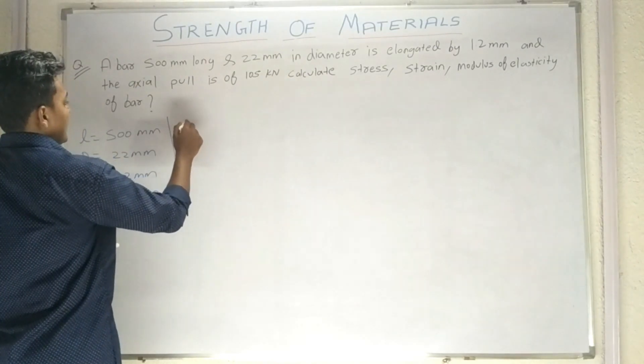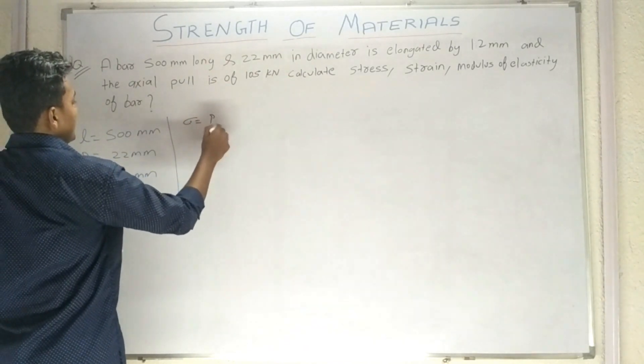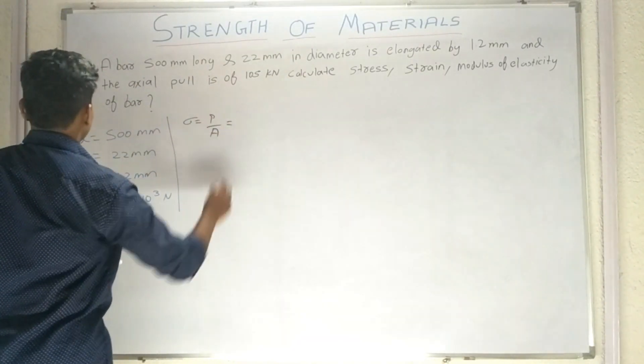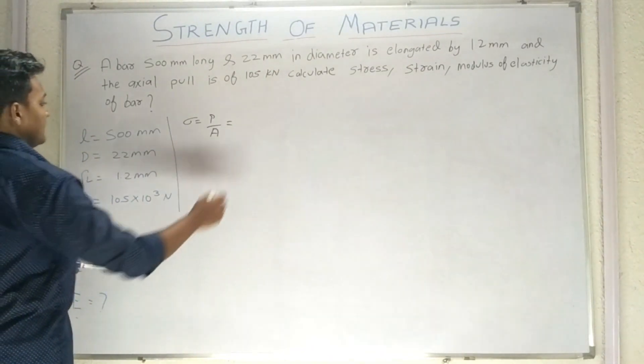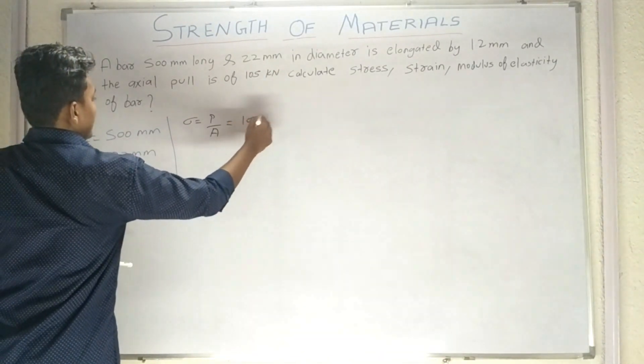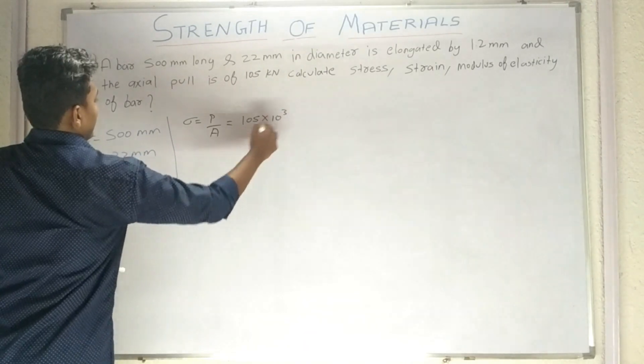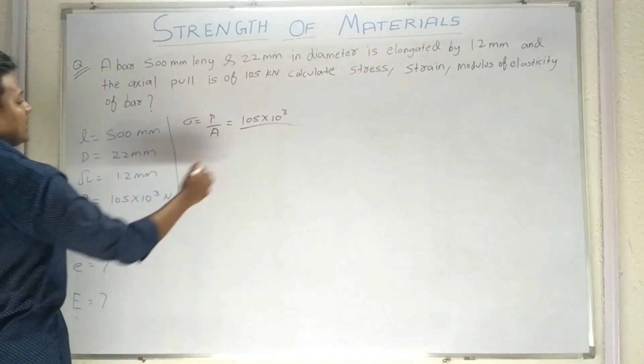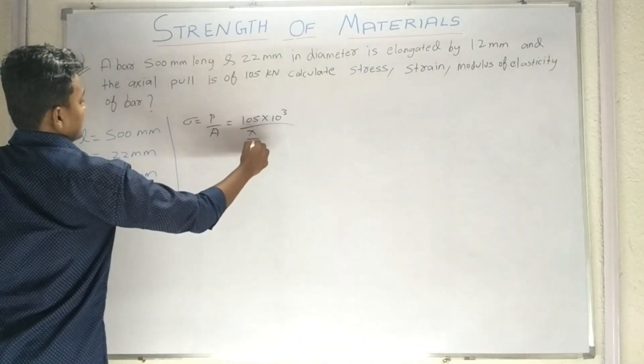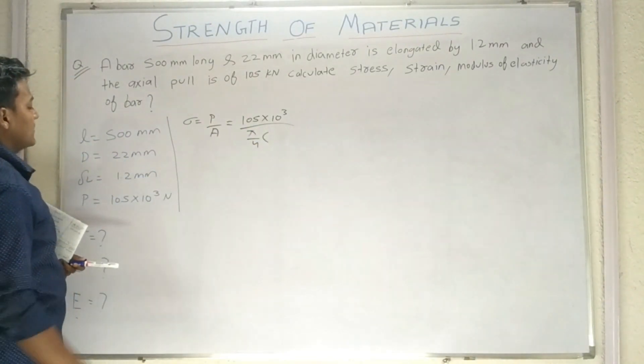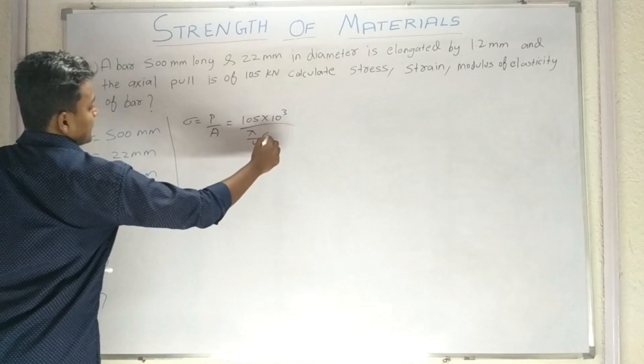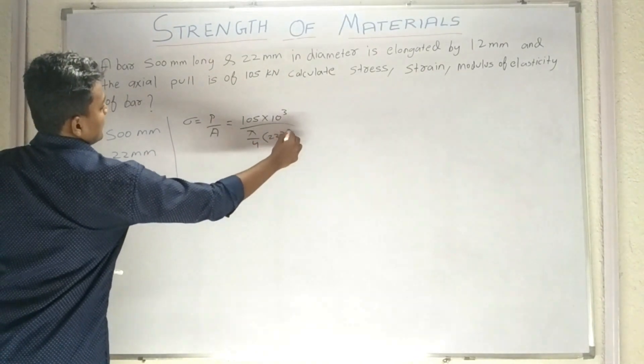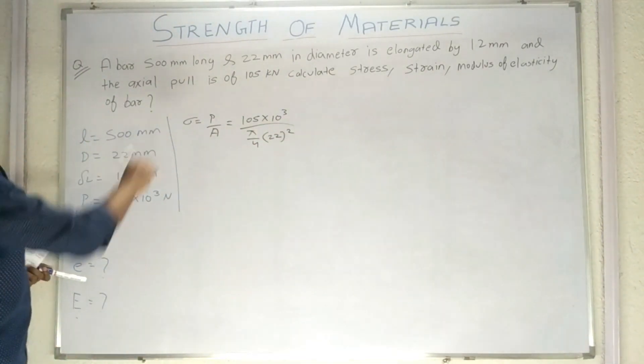So what we have given the stress force as the cross-sectional area of the bar, A. So yes, sigma equals 105 into 10 raised to 3 upon area. Area ka formula hai pi by 4 D square, so D is 22. This is the area.